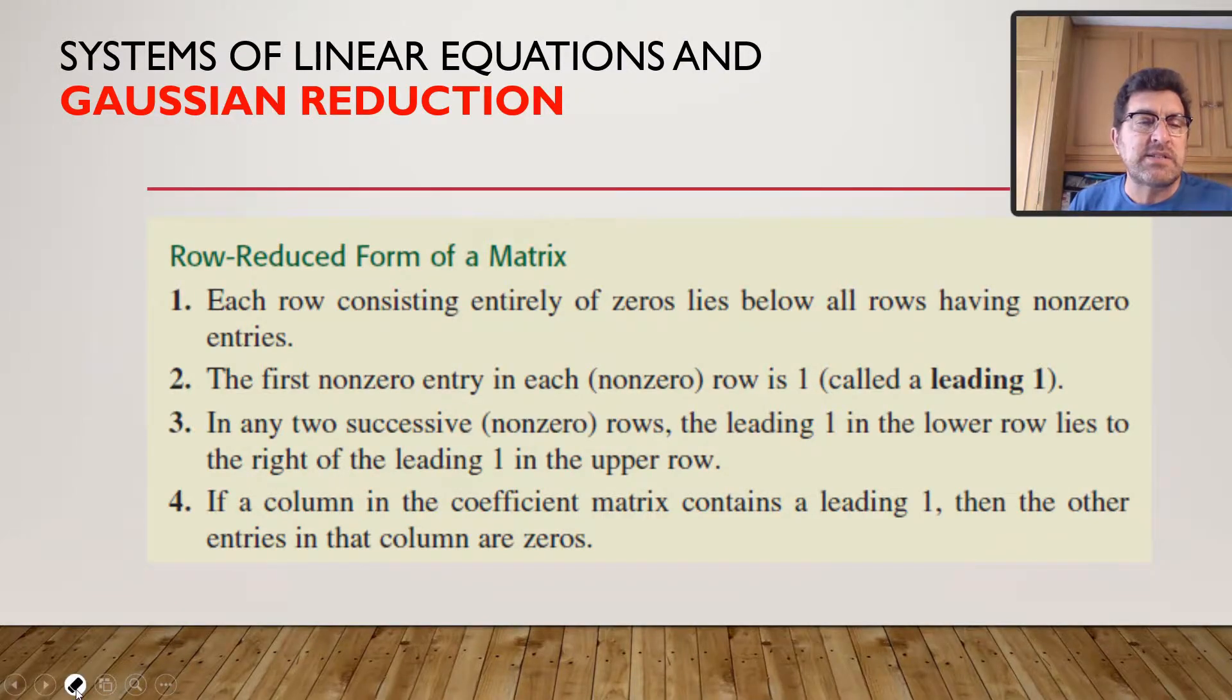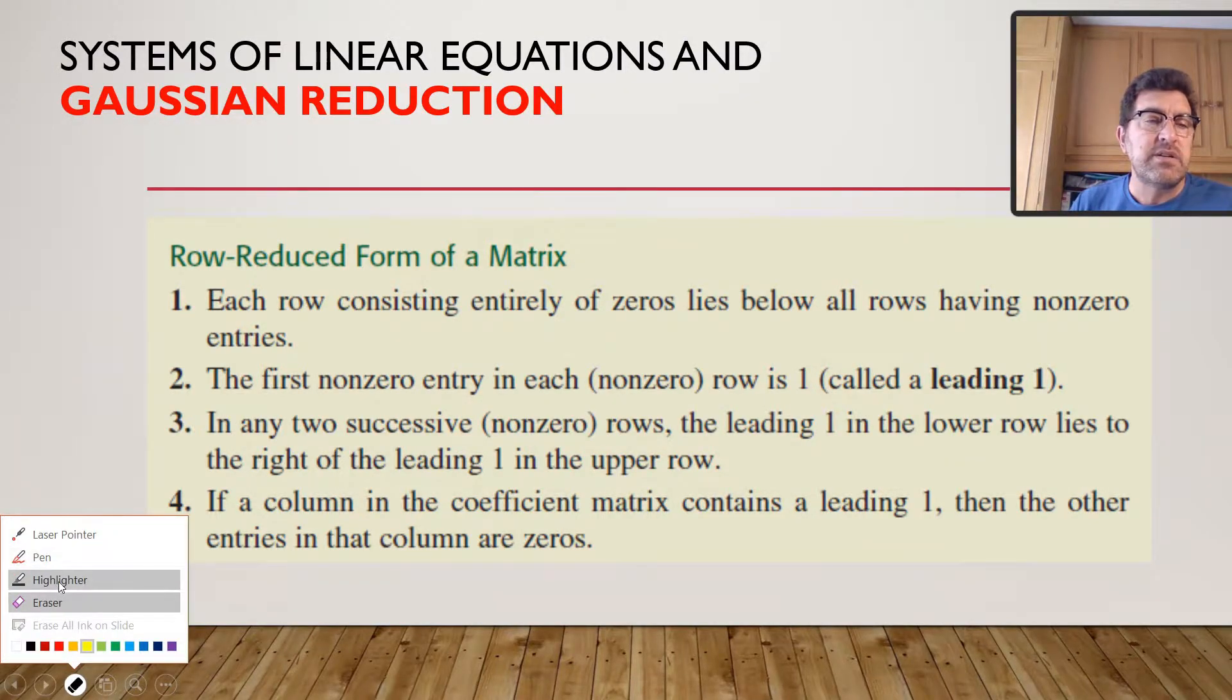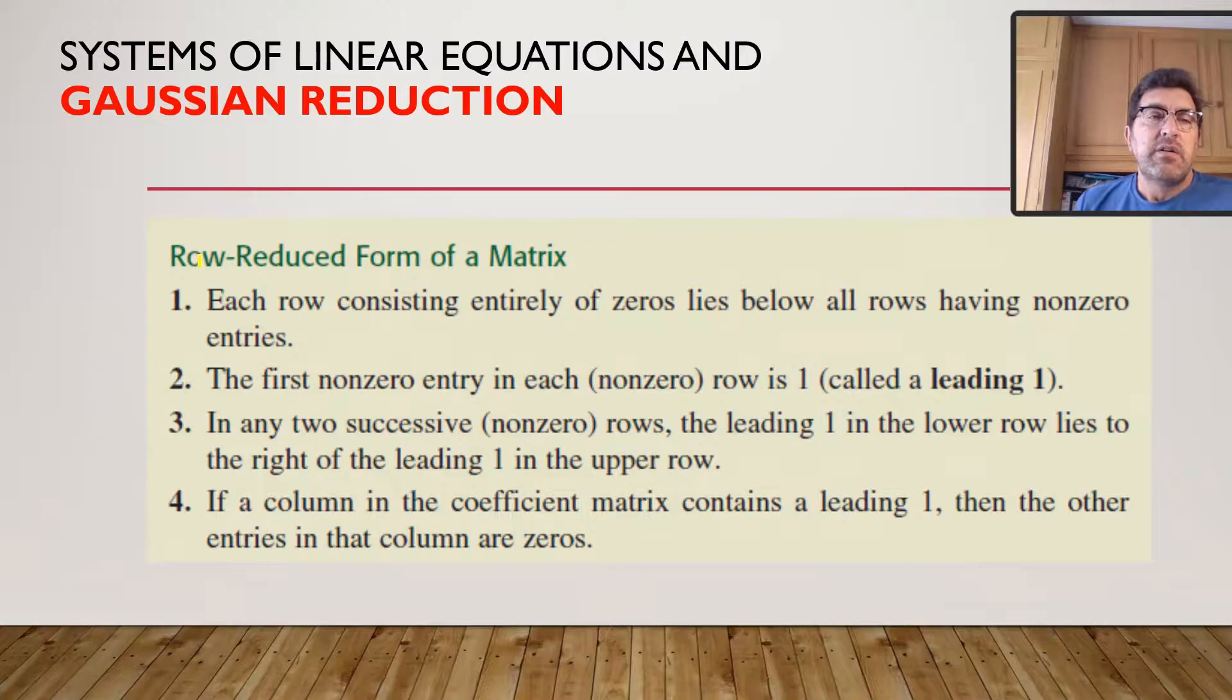For row reduction form of a matrix, in other words, the Gaussian reduction, we call that row reduction form of a matrix. Each row consisting entirely of zeros lies below all rows that have non-zero entries. The first non-zero entry in each row is one. It's called the leading one.